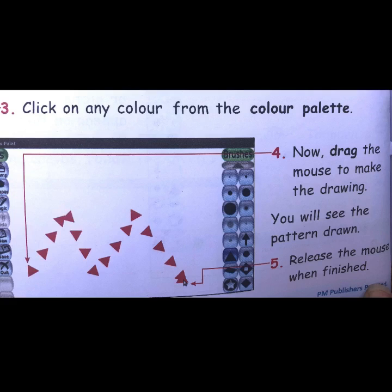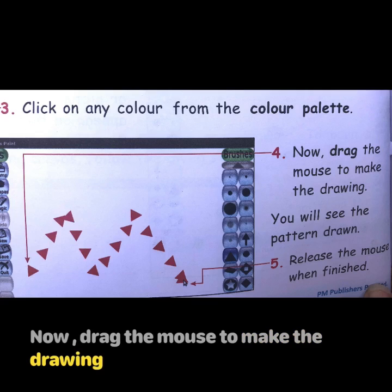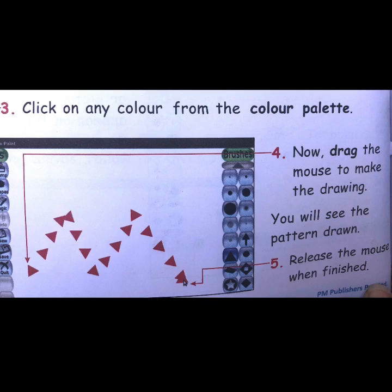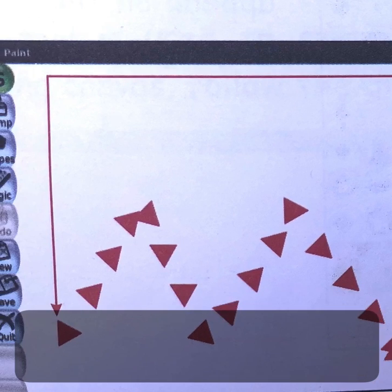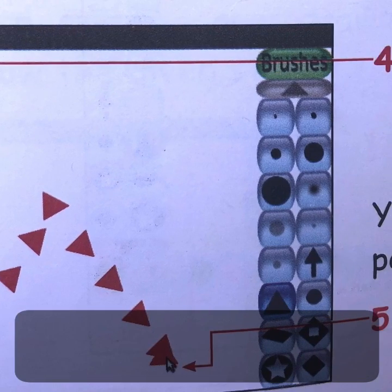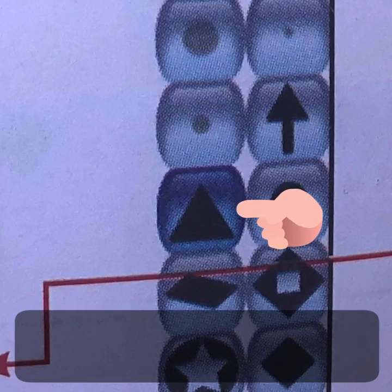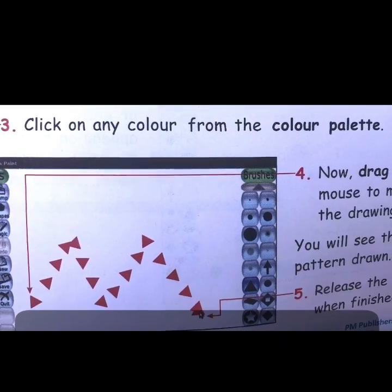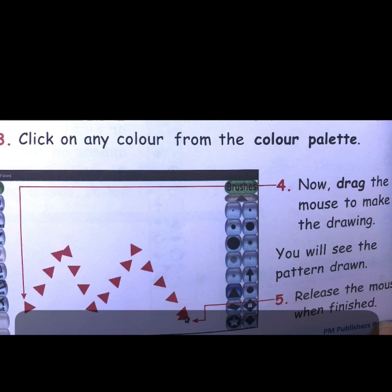The fourth step is to drag the mouse to make the drawing. You will see the pattern drawn on the canvas. We are seeing a triangle-shaped pattern because we selected the triangle shape from the selector — that's why you will see this triangle shape when you choose a triangle-shaped brush.